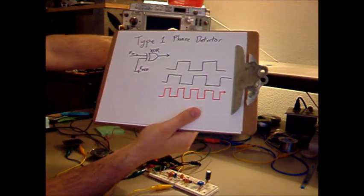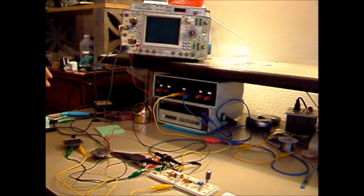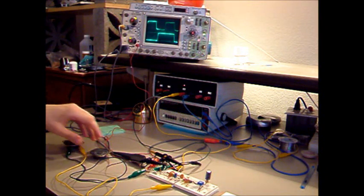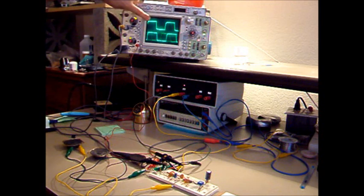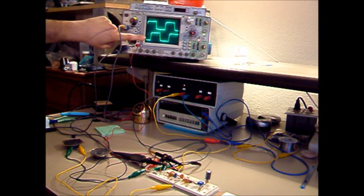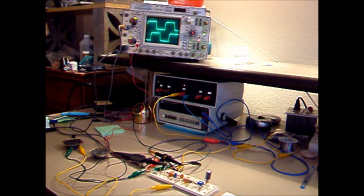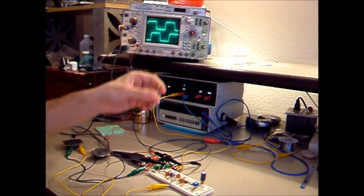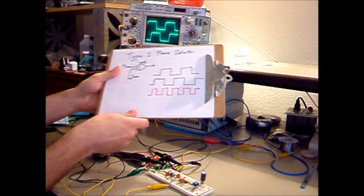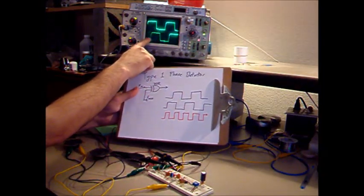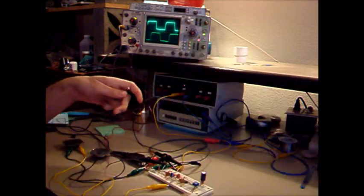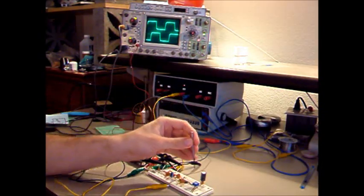Let me show you that now on my oscilloscope. Here's the input signal, here's the output signal. You can see it ramped up until it locked. Now taking my screwdriver, I'm going to adjust the input frequency. Just as we predicted, the output is leading by 90 degrees, because we're right in the middle of our control voltage — running about 2.5 volts.